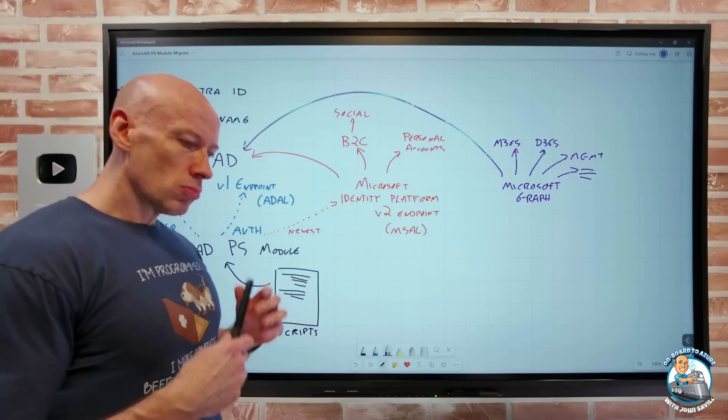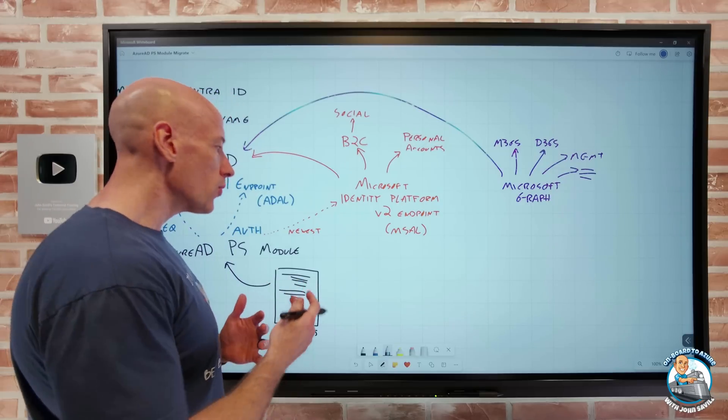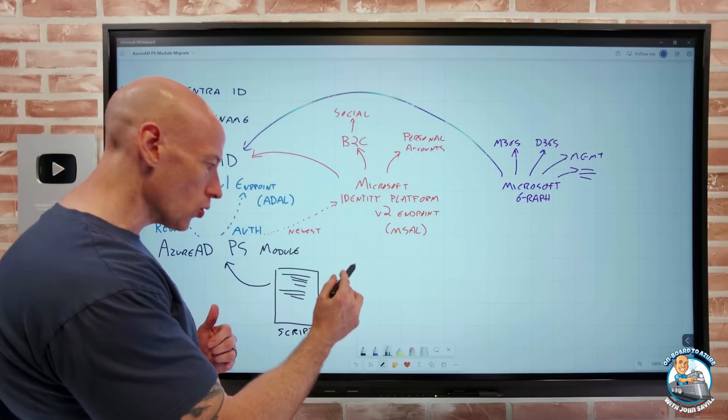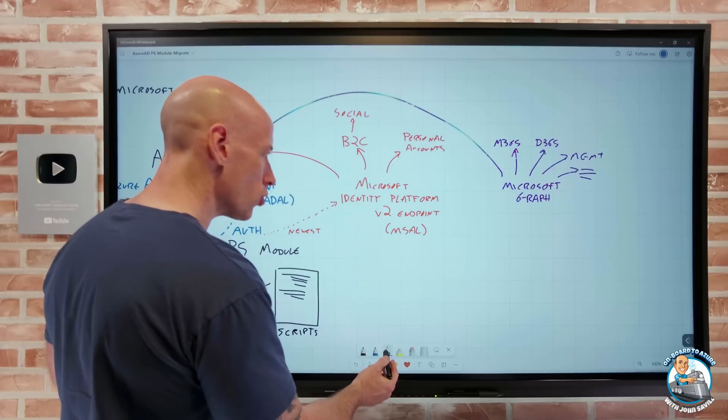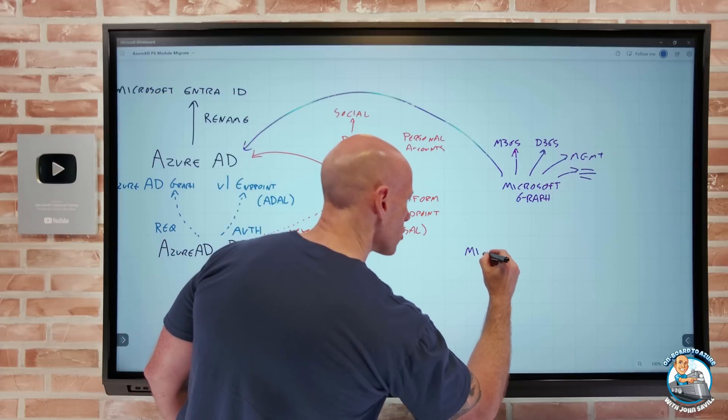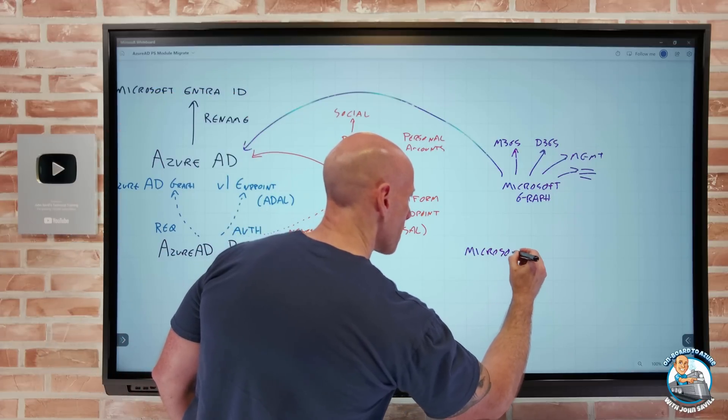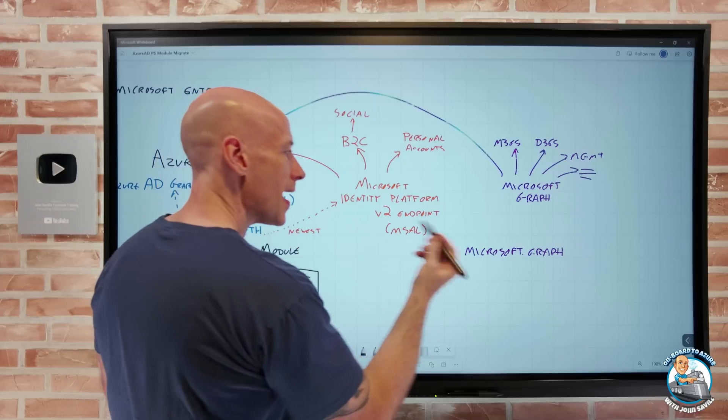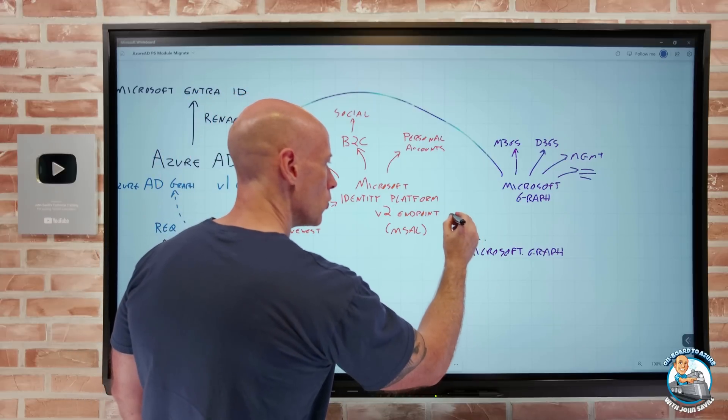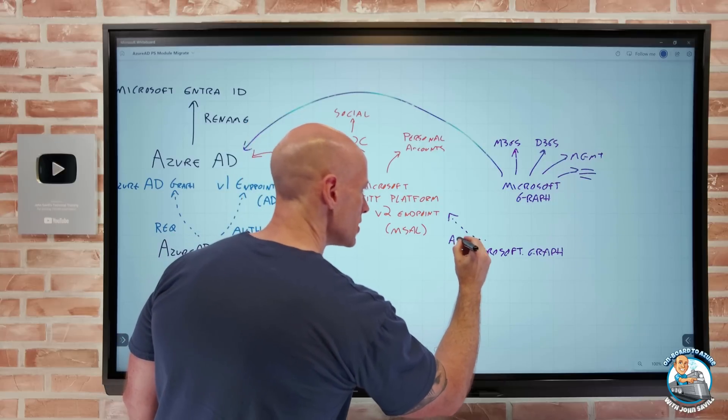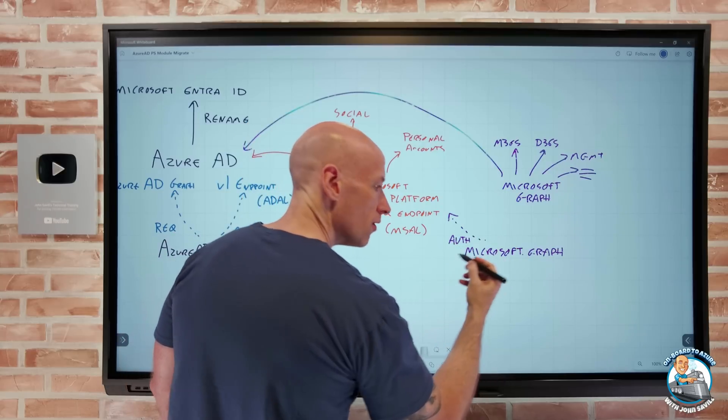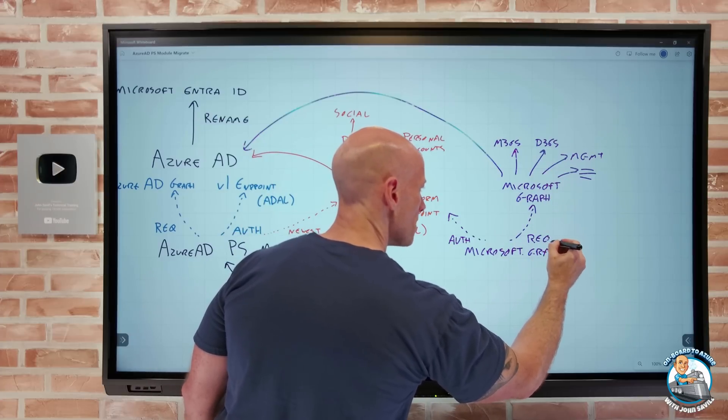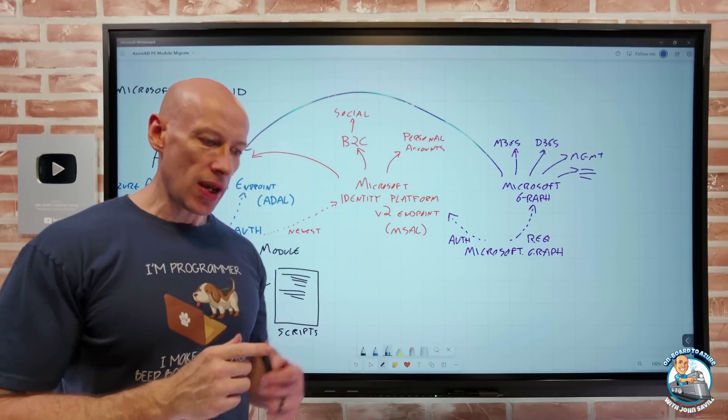Obviously, to be able to leverage this, they also created a Microsoft Graph PowerShell module. As you would expect, for the authentication and authorization it uses the V2 endpoint. For all of its requests and interactions, it's using Microsoft Graph. So this is absolutely the way forward.